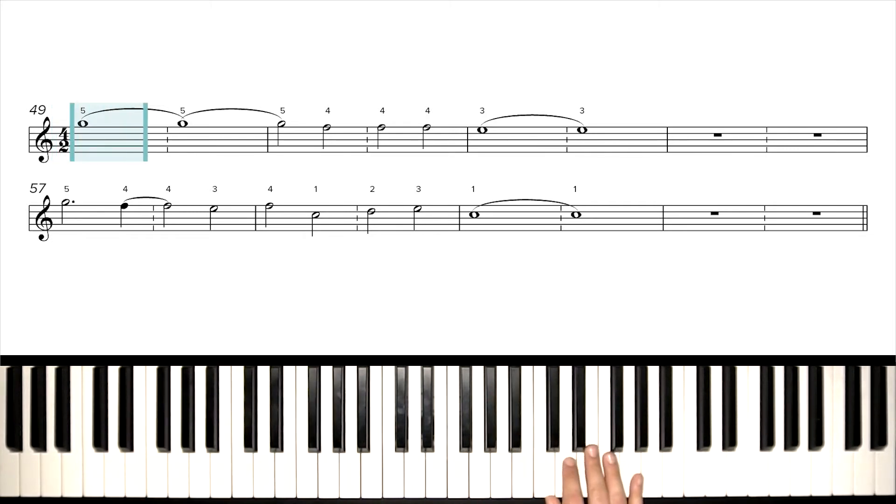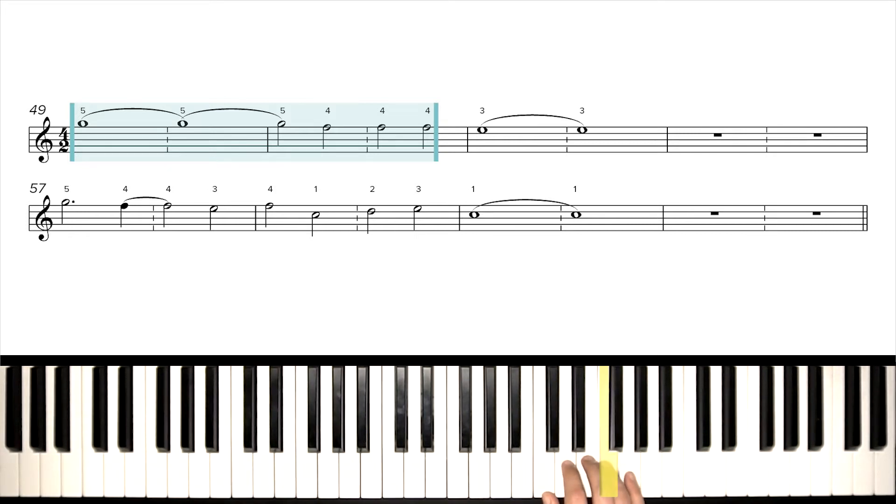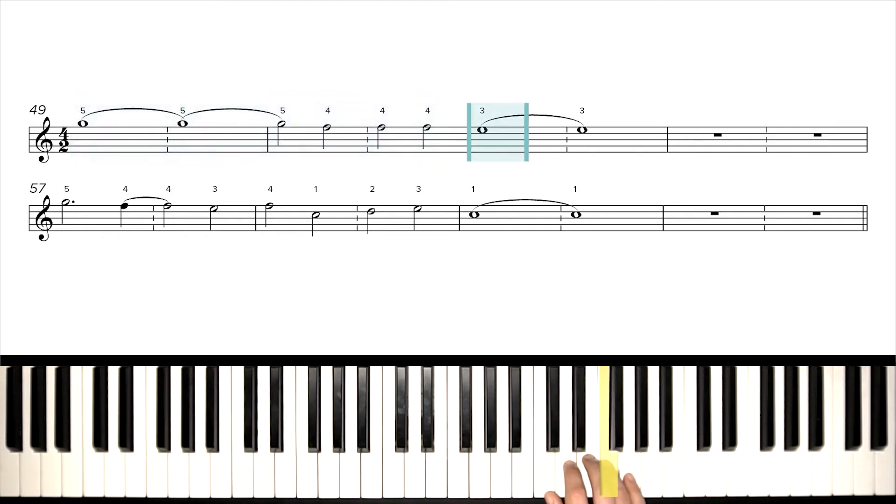Our first note is G. We're going to be pretty high up. We're playing that with our fifth finger. We're tying that over into a third measure, and then we keep going. Fourth finger on F, a few of those in a row, and then third finger on E. Then we have two measures of rest, during which we should look down and look ahead at what's coming next in measure 57, the next section. That's another G with our fifth finger, and then a quick F tied over. Three on E, four back up to F, and then our first finger on C.